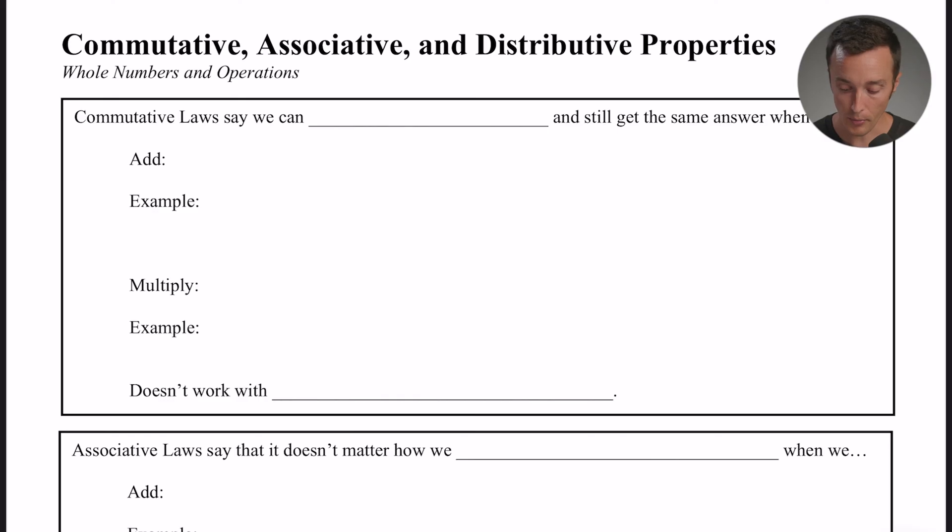Hey how's it going everybody, welcome back to Melanie's Math. Today we're going to be talking about the commutative, associative, and distributive properties. These are three basic arithmetic properties, and if you want to follow along with the worksheet that we have, you can find it at the first link in the description below.